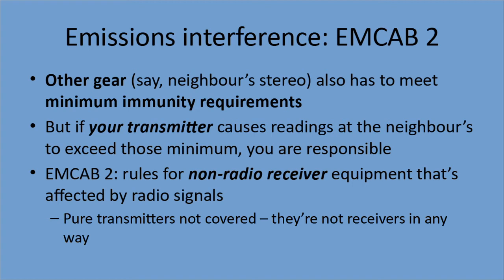Here's the deal: if your transmitter is within rules and their device is being interfered with, tough luck — they're supposed to have minimum immunity requirements. But if your transmitter is causing readings at the neighbor's site that exceed the minimums you're allowed to have, then you are responsible. The MCAB 2 rules are for non-radio receiver equipment that's affected by radio signals. Receiver equipment — that's key for the test. Pure transmitters are not covered because they're not receivers in any way. You cannot be transmitting interference above a certain limit, and the devices that your neighbors have have to be protected at a certain level.